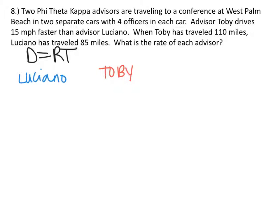So let's focus on Luciano. Luciano travels 85 miles. The distance is 85. We don't know anything about Luciano's rate and we don't know how long he drove. So 85 equals R times T.